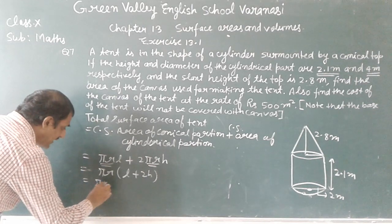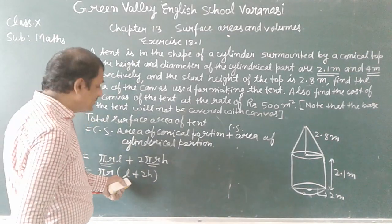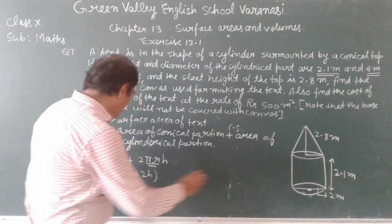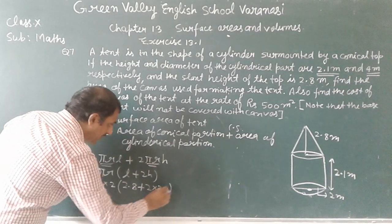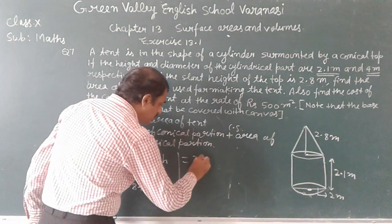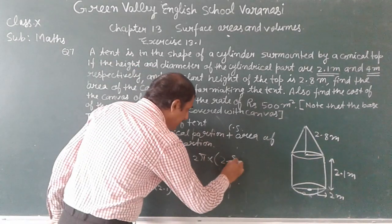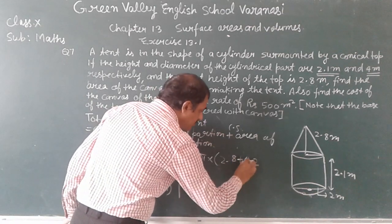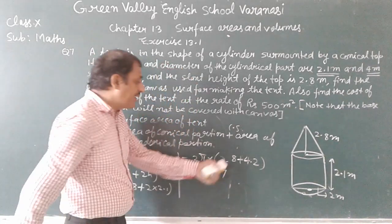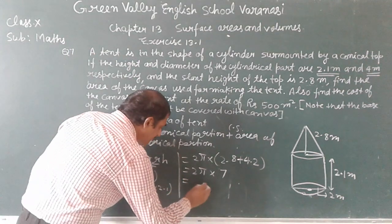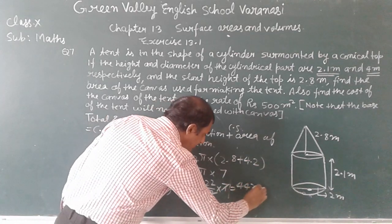The radius r is 2 meter. L is the slant height of the conical portion, which is 2.8 meter, and h is 2.1 meter, so 2h = 4.2. Substituting: πr(l + 2h) = (22/7) × 2 × (2.8 + 4.2) = (22/7) × 2 × 7 = 44 meter square. So the total surface area of the canvas is 44 meter square.